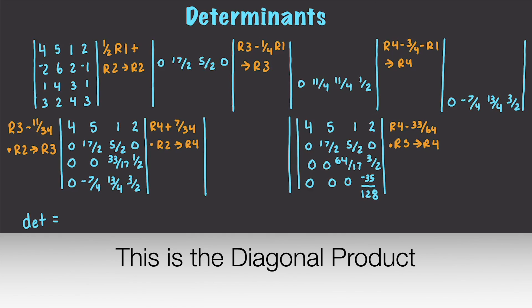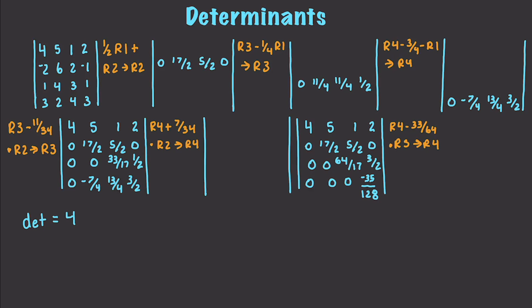Now what we can do to find our determinant is multiply the 4 times the 17.5 times the 64 over 17 times the negative 35 over 128. That's going to give us our determinant as well. Sometimes this is considerably easier to do.